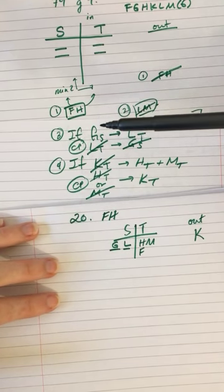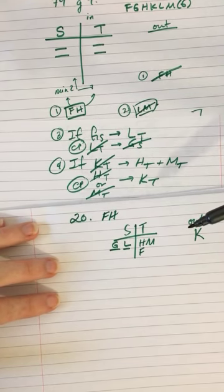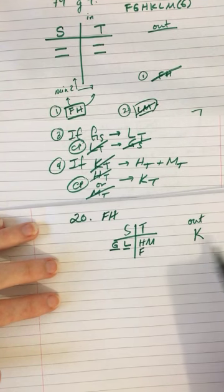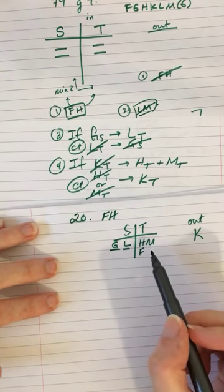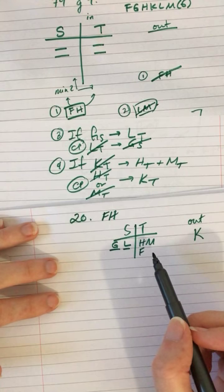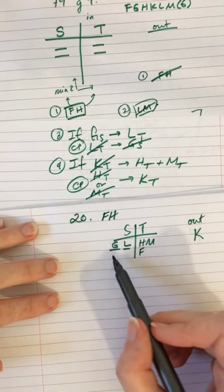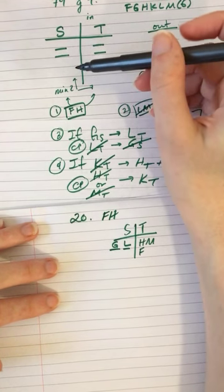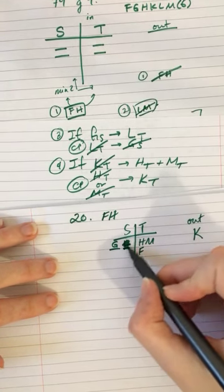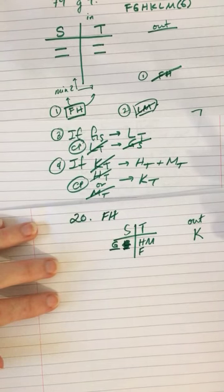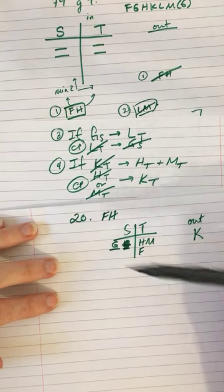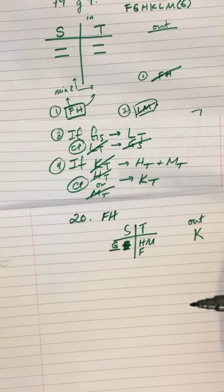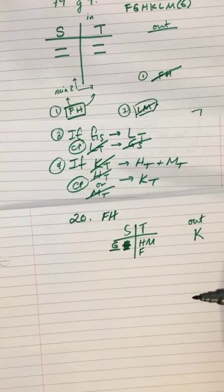The reason is rule three. So if G is in S, then L has to be in T. So putting K out is going to land us in a situation where either we're breaking rule three by putting G and L both in S or we're breaking the minimum rule because by avoiding putting G and L both in S, we're only going to have one player in group S. So that's not allowed.